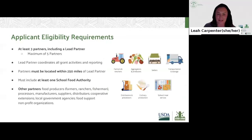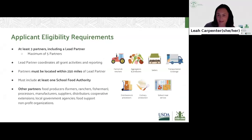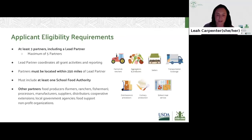Here are some of the applicant eligibility requirements. Projects must be collaboratively administered by at least three local partners and have a designated lead partner. A maximum of five partners can be named on the application. Groups of partners must include at least one school food authority, or SFA. An SFA is defined as the administering body for the operation of a school food feeding program, such as the National School Lunch Program and Breakfast Program. The SFA is the entity that receives federal meal reimbursements for meal programs. This may be a school district, several school districts, or individual schools — public, public charter, or private. SFAs also include residential child care facilities that participate in the National School Lunch or Breakfast Program.